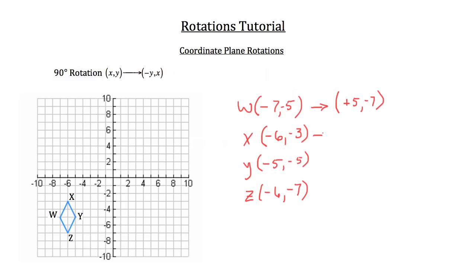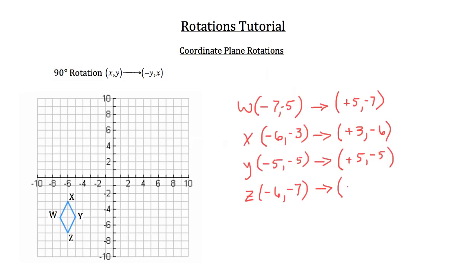Let's do the same for X. The X coordinate was at negative 6, negative 3. So now it's going to be negative 3, negative 6. And we flip that old y coordinate — which is now the x coordinate — so the sign changes to the opposite; it was negative 3, now it's positive 3. For Y, it was negative 5, negative 5, so now it's negative 5, positive 5. And lastly, Z was negative 6, negative 7, so now it's negative 7, positive 7 — giving us negative 7, negative 6 with the sign switched to positive 7.